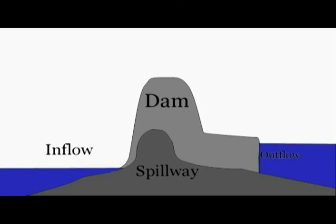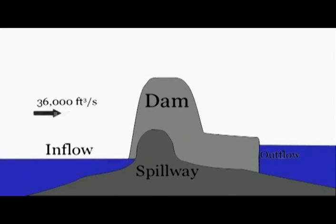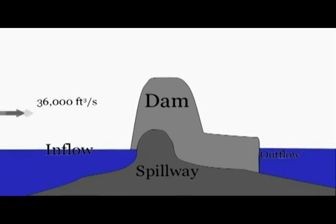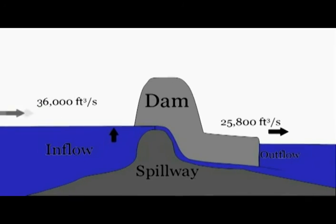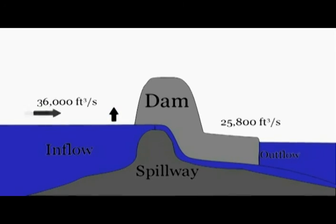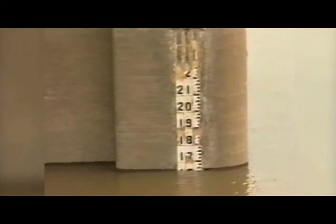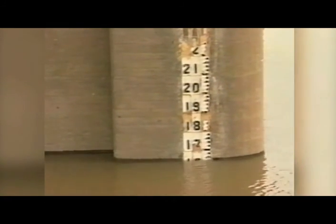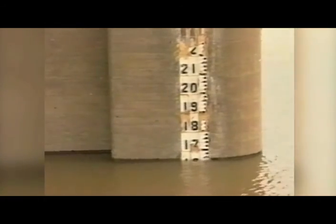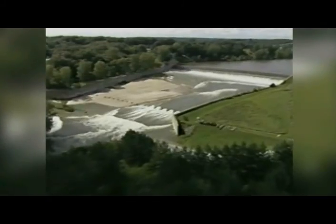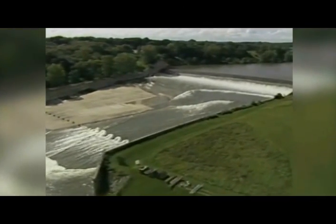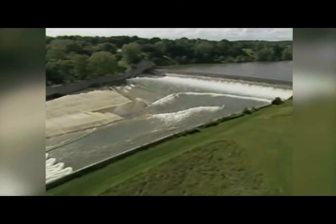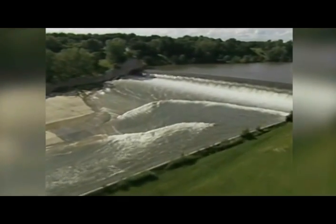While inflows of up to 36,000 cubic feet of water per second occurred, outflows never exceeded 25,800 cubic feet per second. This imbalance of flows caused the pool to rise higher and higher, finally cresting at level 716.71 on the morning of July 24th. In all, water flowed over the emergency spillway for 28 consecutive days, finally ending on August 2nd, 1993.